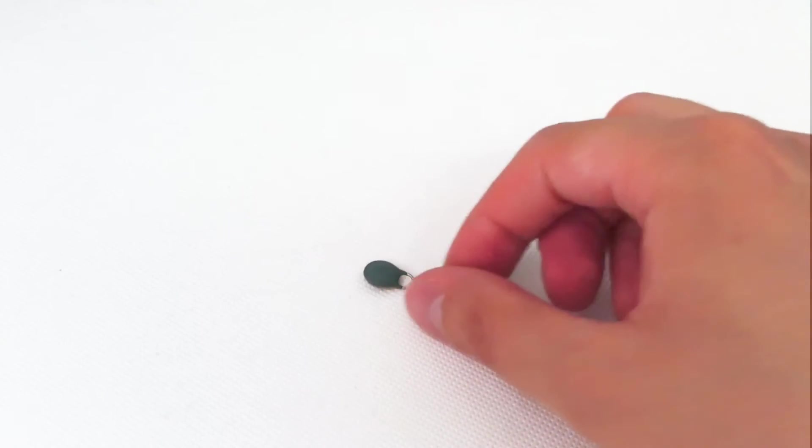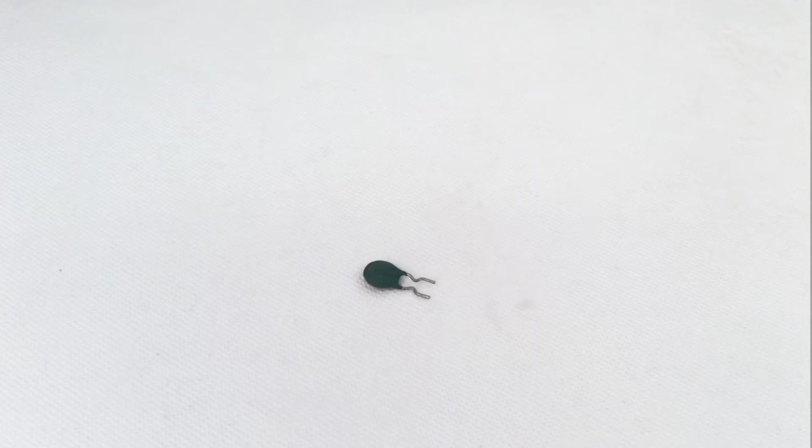The last type of resistor we're going to look at is this, and this is a thermistor, and as you might be able to guess from the name, it varies the resistance according to the temperature.